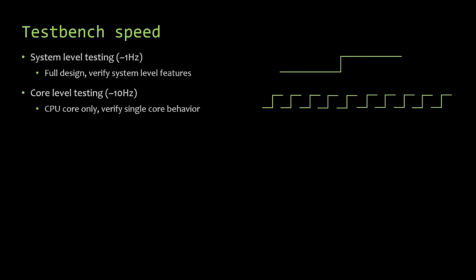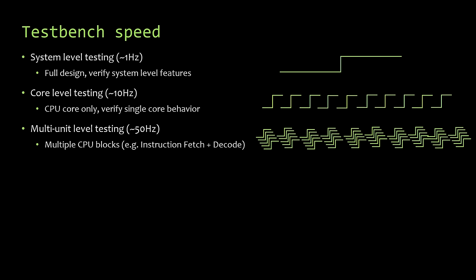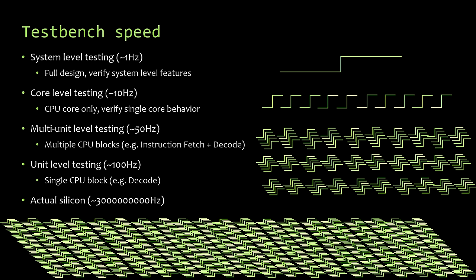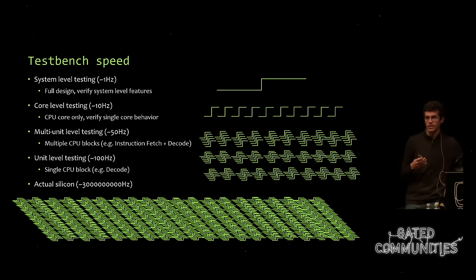Breaking it down further, you can get what I call multi-unit testing — combining a few related blocks like instruction fetch and a decode unit together. Or you can go down to single-unit testing, like just the decoder or load store unit, and you're looking at around 100 to 200 cycles per second of simulation. Compare that to real silicon running at 3 billion cycles per second. In fact, in the very first second that you power on a CPU, that's the equivalent of 9.5 years of testing at the system level. So as soon as you turn the thing on, it's already gone through more verification than it ever did.